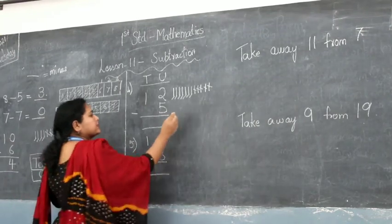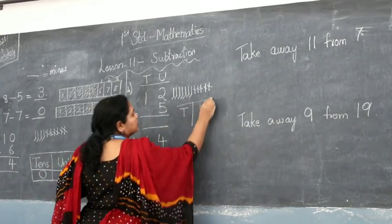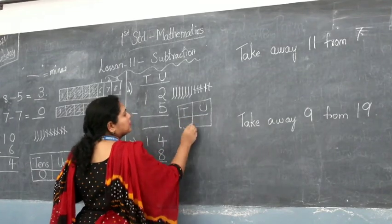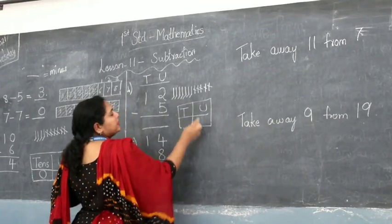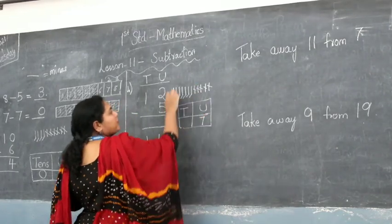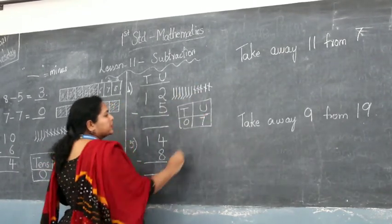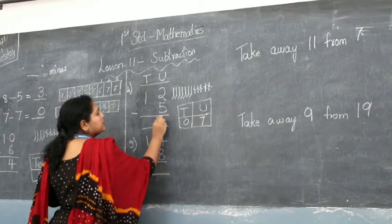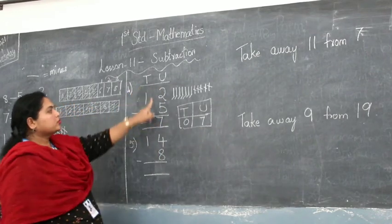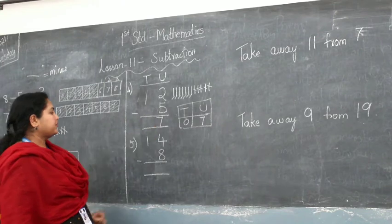So that is 10s and units. I am left with 7 units because I don't have any group of 10s here, so it is 0 tens. I am left with 7 units, so I will write it in the units column. So 12 minus 5 is 7.